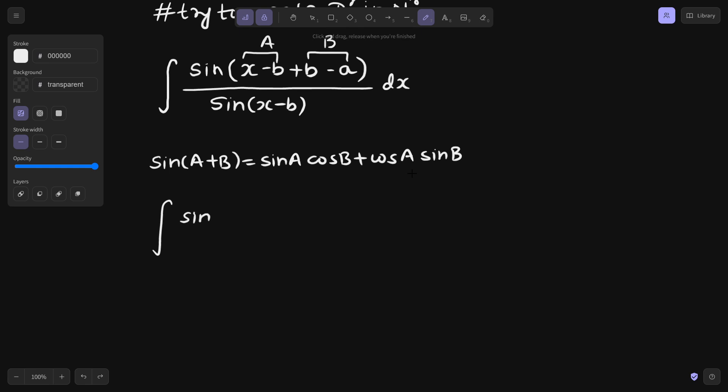Let's apply this formula: sin x minus b cos b minus a plus cos x minus b sin b minus a divided by sin of x minus b, divided by sin of x minus b.